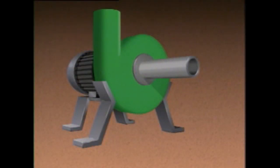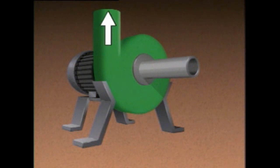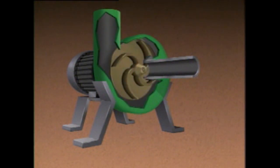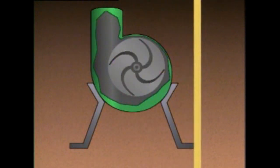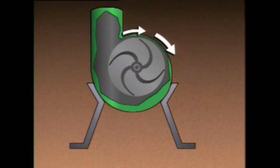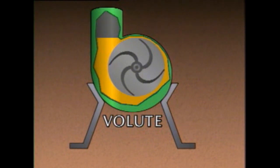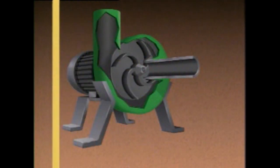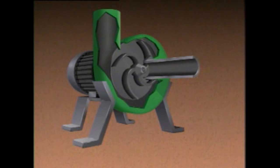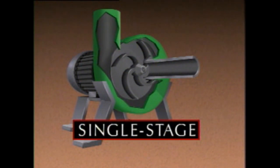We can see how a centrifugal pump works by using this simplified illustration. All centrifugal pumps have an inlet, a casing, and an outlet. Inside the pump's casing is an impeller with a series of curved vanes that extend out from its center. The pump's casing is designed so that the area around the impeller creates a gradually widening spiral channel known as the volute. Since this pump has only one impeller and one volute, it is referred to as a single-stage pump.